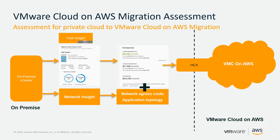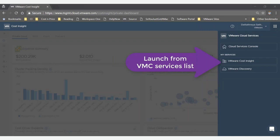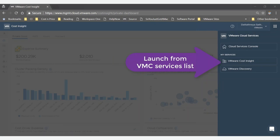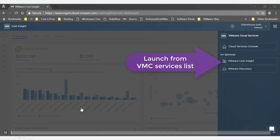You feed the application topology into the Network Insight tool to assess egress costs, then feed that into Hybrid Cloud Extension to perform the migration. Let's look at a quick demo of what a migration plan scenario looks like. When you log into VMware Cloud on AWS, we've added the migration assessment as part of the offering, accessible from the dropdown menu.